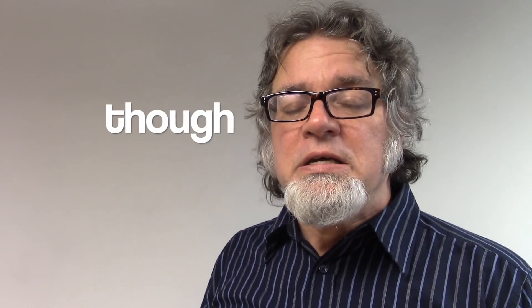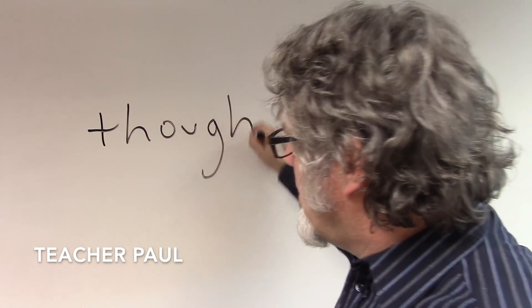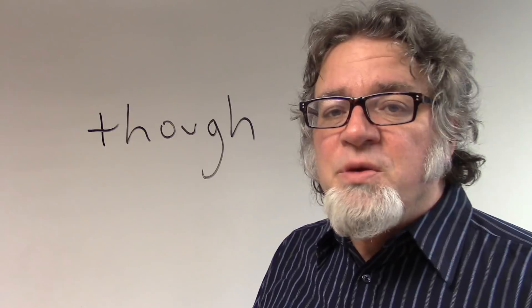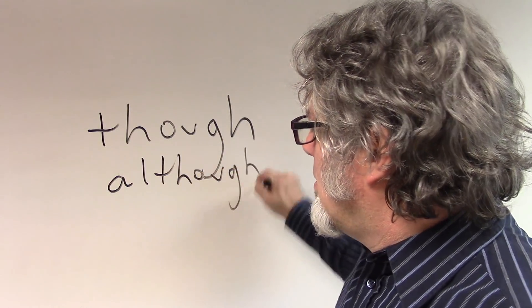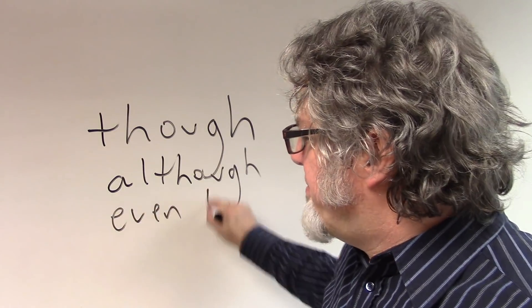The word though is a type of subordinating conjunction, similar to even though and although. In this video, I'll explain how to use the word though. This is similar to the words although or even though. Though.